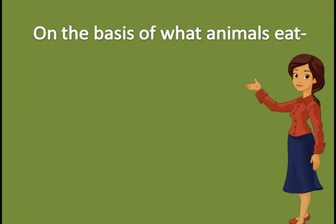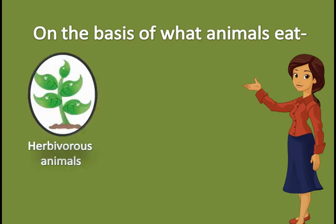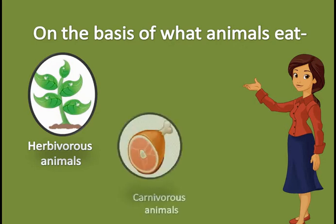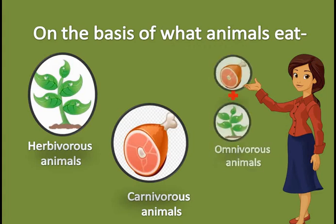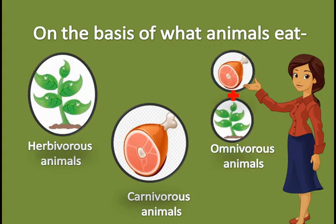On the basis of what animals eat, they are divided into 3 categories. Those who eat plants are called as herbivorous. Those who eat flesh are called as carnivorous. Those who eat plant parts and flesh of other animals are called as omnivorous animals.